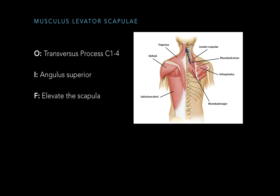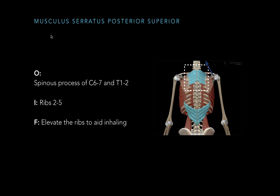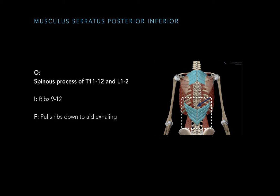Now we go to the third layer: musculus serratus posterior superior and inferior. The superior originates at the spinous process of C6, C7, T1, and T2. Since there are four origin points, it has four insertion points as well, which are ribs 2 to 5. Its function is to elevate the ribs and aid inhaling. The inferior originates at the spinous process of T11–T12 and L1–L2 and sits on ribs 9 to 12. Its function is to pull the ribs downwards, which aids exhaling.